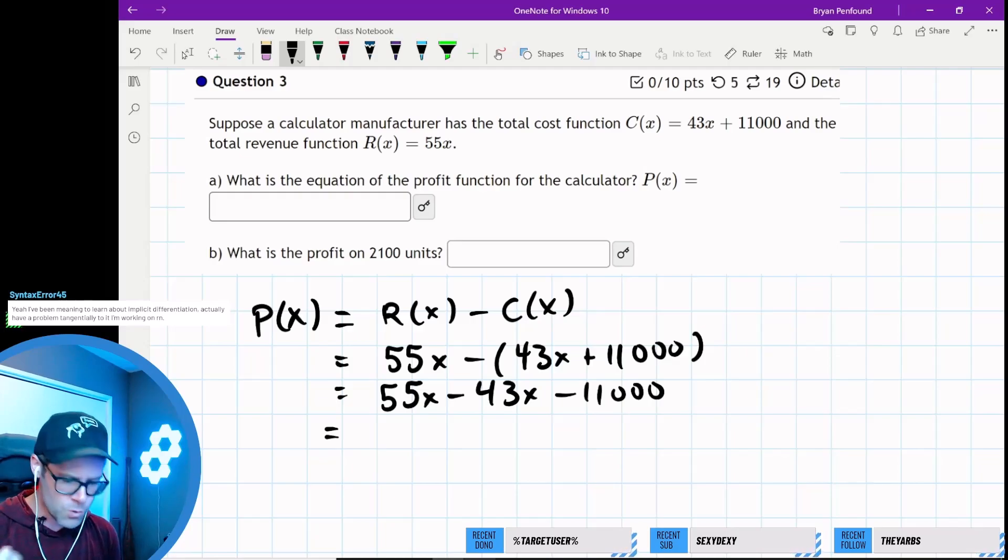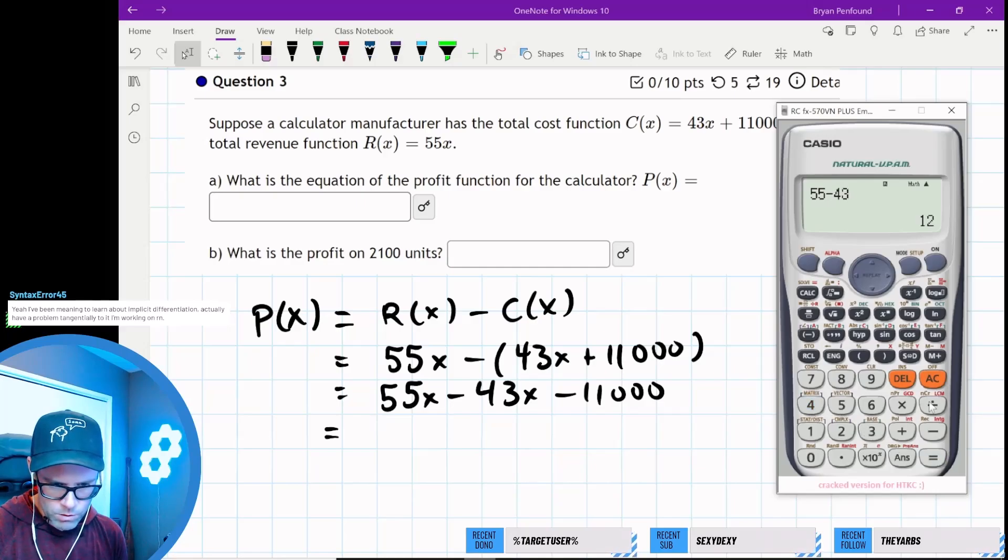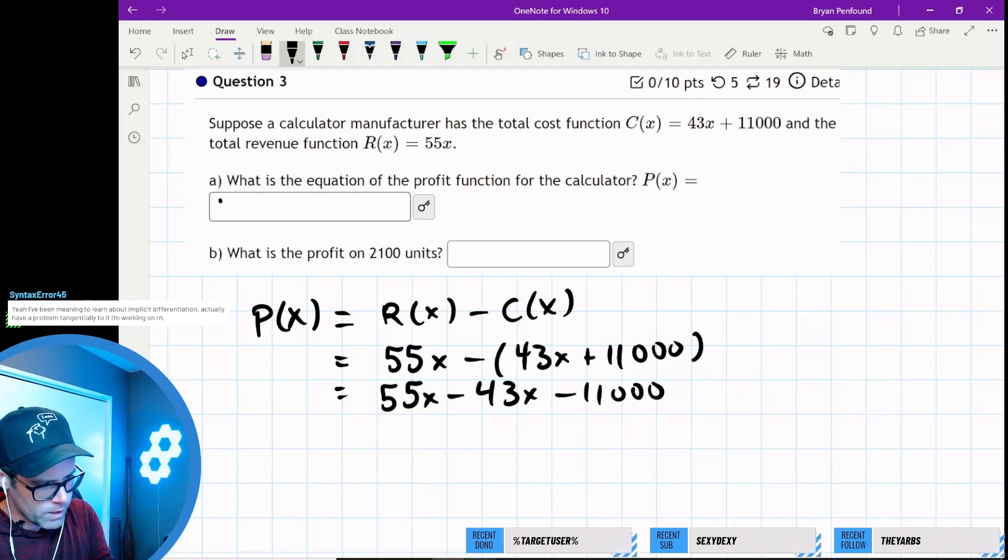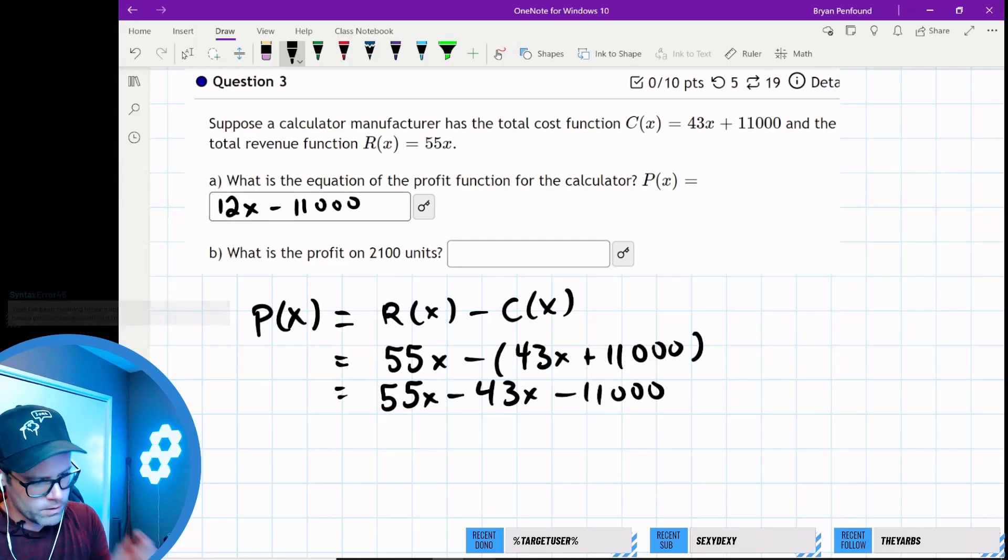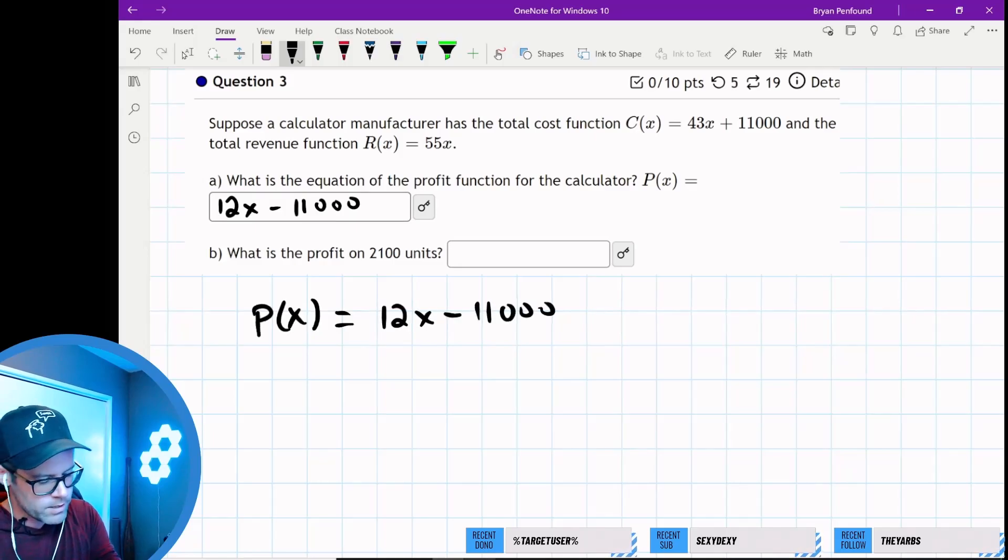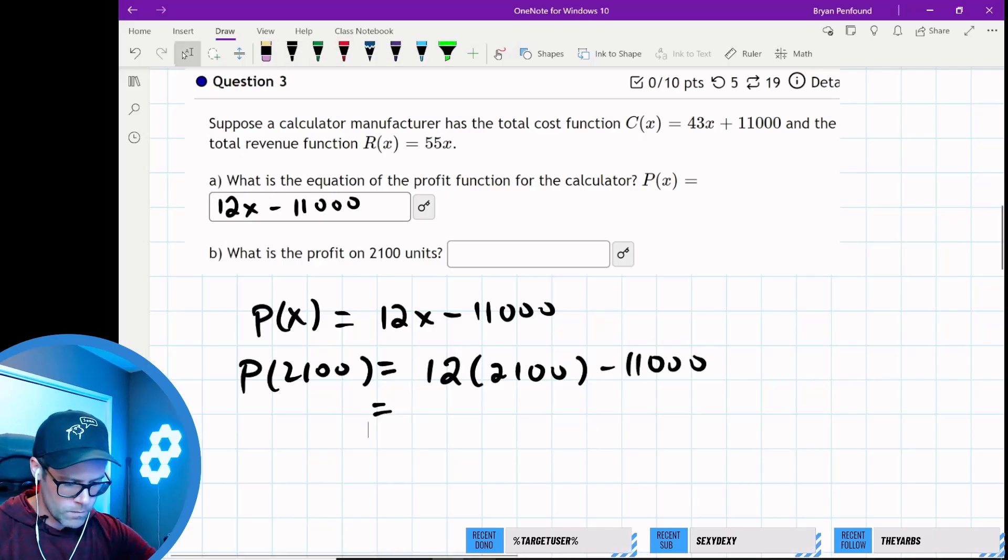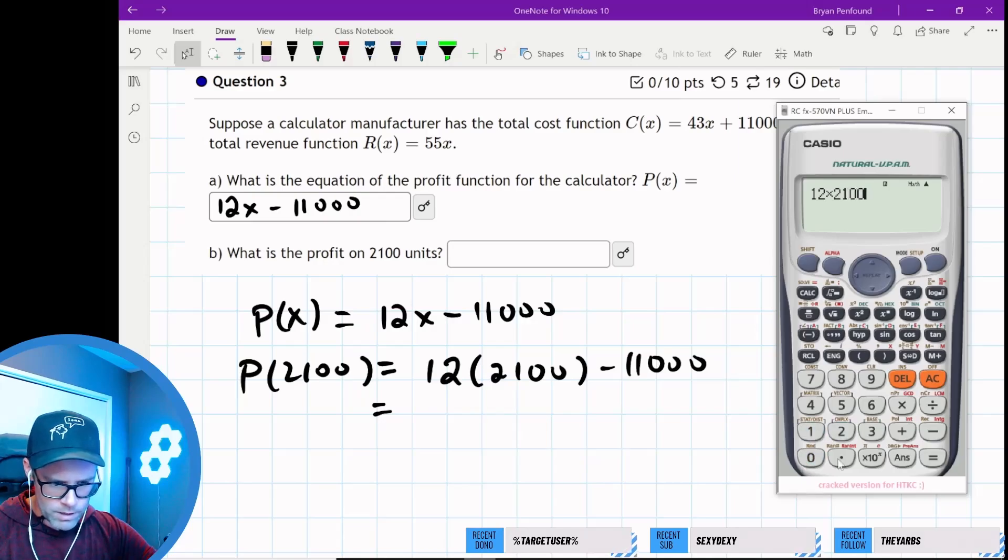Let's distribute the minus sign through the brackets. We have 55x minus 43x minus 11,000. That gives us 12x minus 11,000. The profit on 2100 units is P(2100) = 12 times 2100 minus 11,000, which is $14,200 in profit.